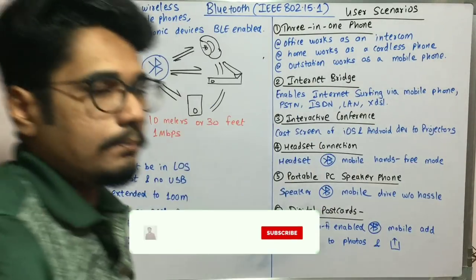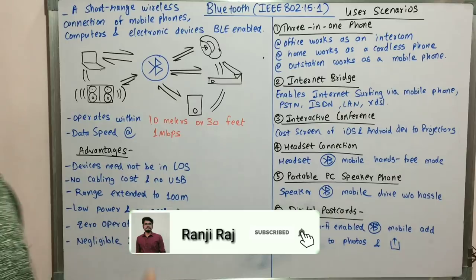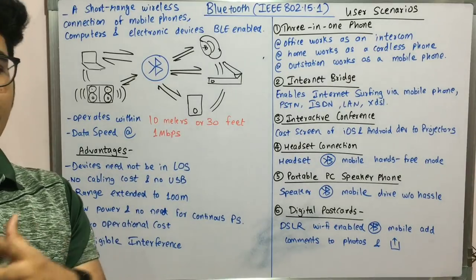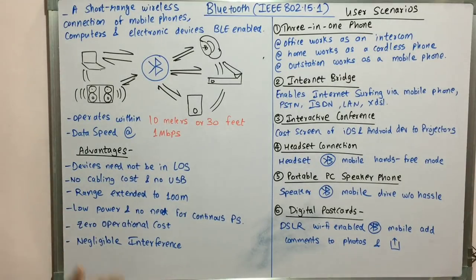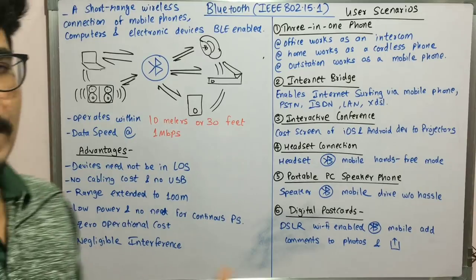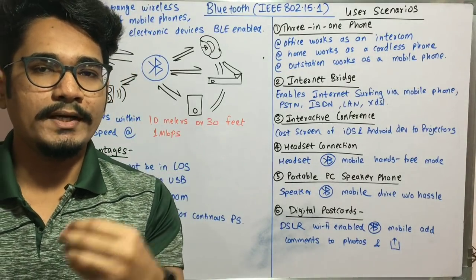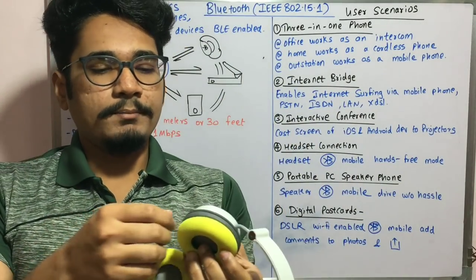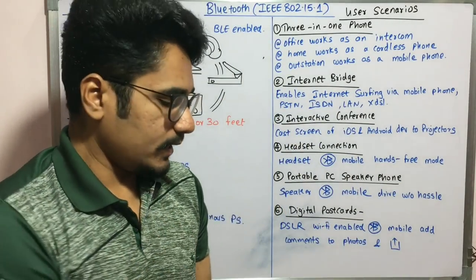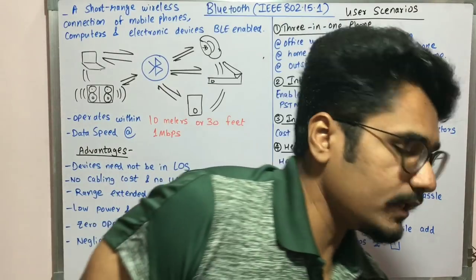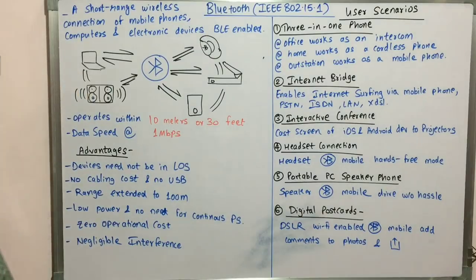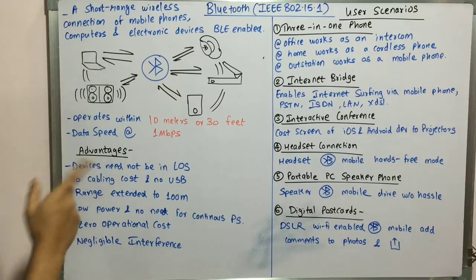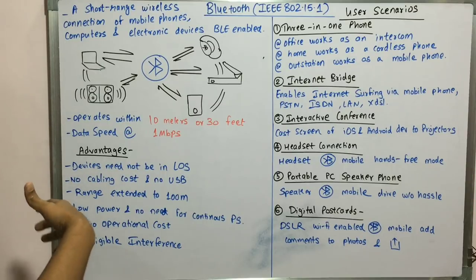Moving on to the advantages of Bluetooth: first, devices need not be in the line of sight — they can be within the specified range or nearby vicinity. Second, there is no cabling cost and no USB required. As demonstrated, you don't need a physical wire to connect these devices — no wired connection was needed in the practical demonstration.